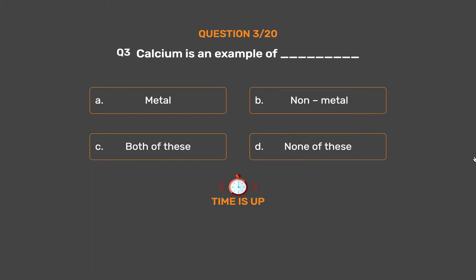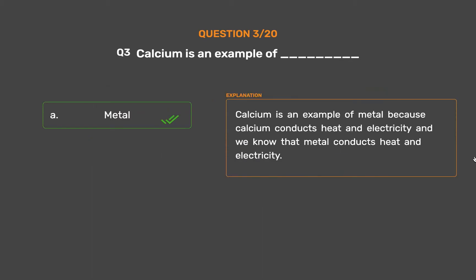The correct answer is Option A: Metal. Calcium is an example of metal because calcium conducts heat and electricity, and we know that metals conduct heat and electricity.